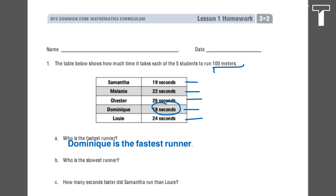Part B. Who is the slowest runner? So talking again in terms of time for slowest, we're looking for the student who took the longest to run the 100 meters.